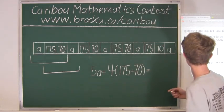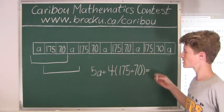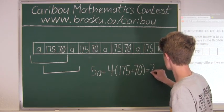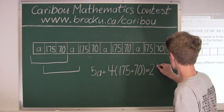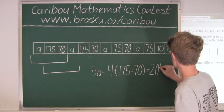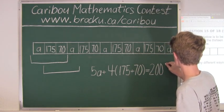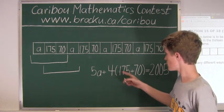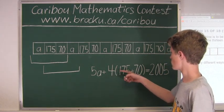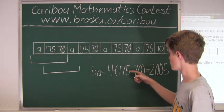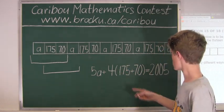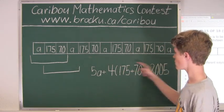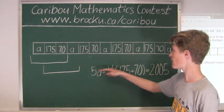And we know that the total of the numbers in all 13 boxes is 2005. So after we find the product of 4 times, and then whatever the sum of 175 and 70 is, then after we have that, we would subtract both sides by that, and then here...